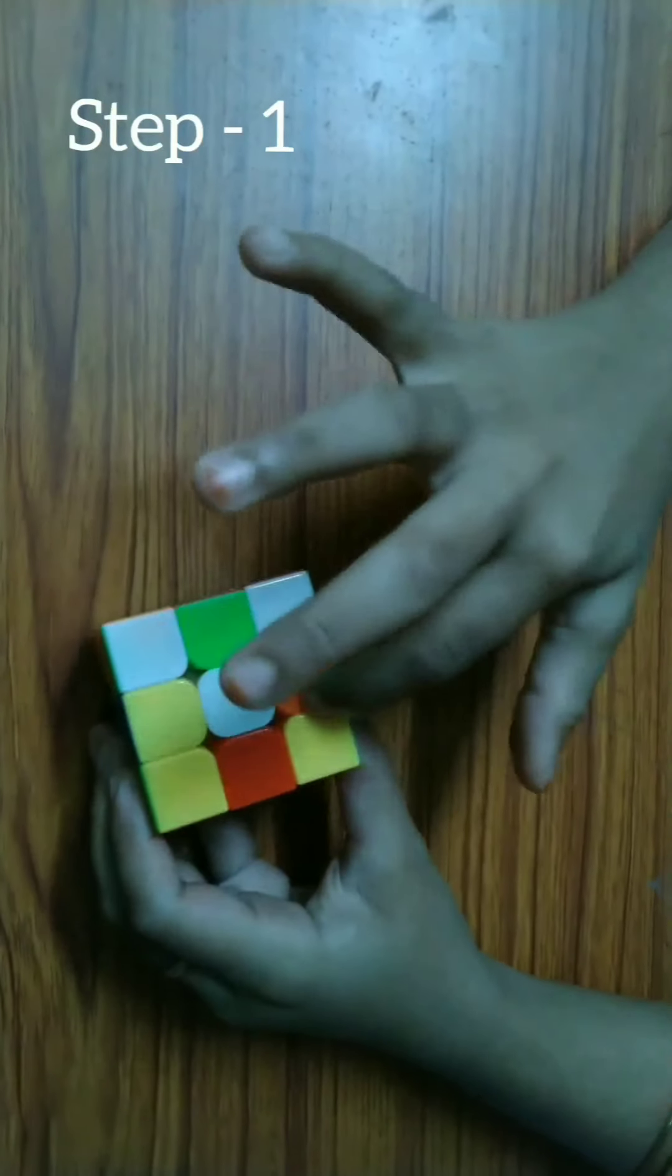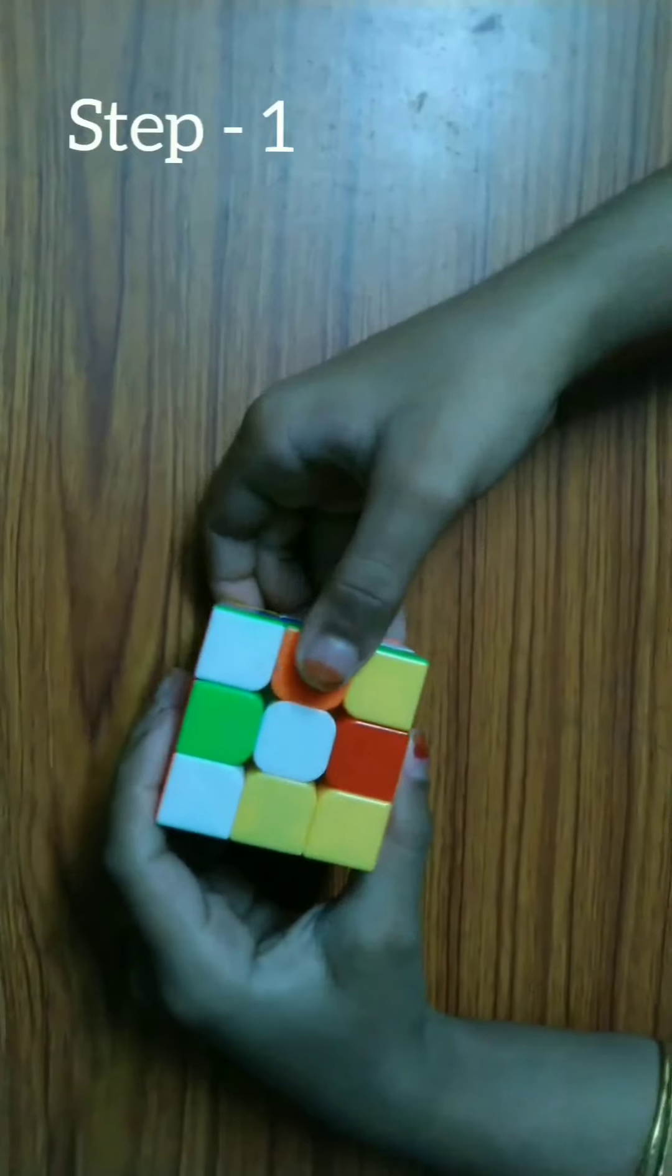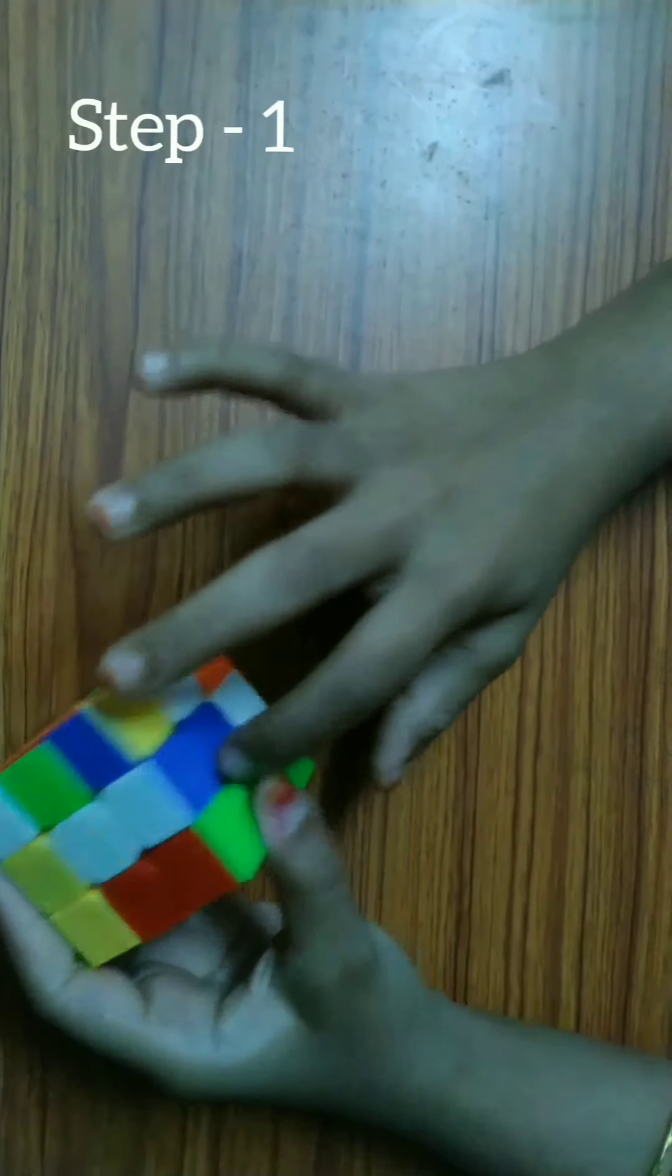First, we should get the white cross on top. There is no specific formula to solve this. We have to practice and understand how we can get white cross on the top.